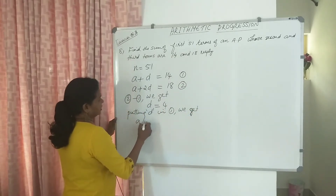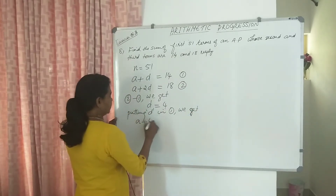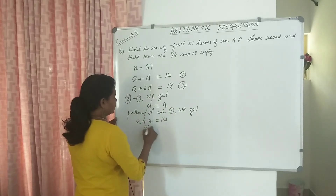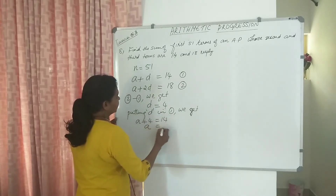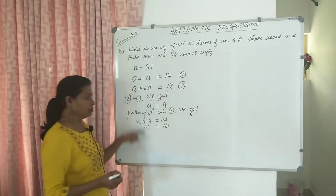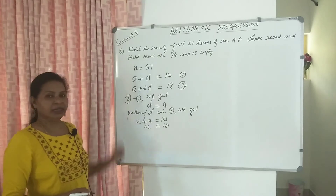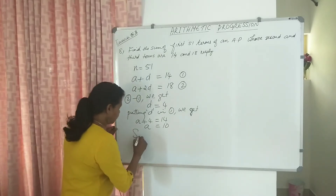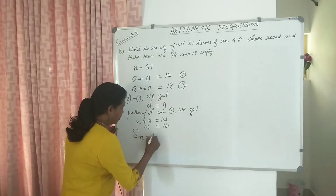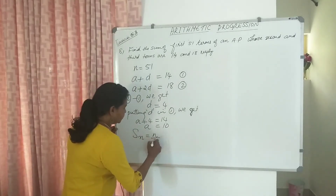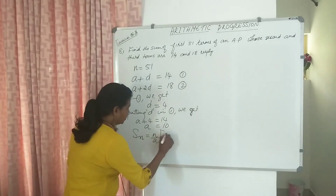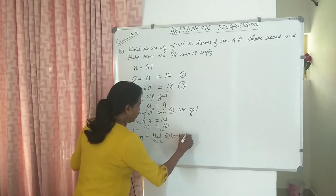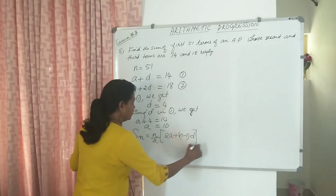Putting D in equation 1, we get A plus D and 4 is equal to 14. So A is equal to 14 minus 4, which is 10. Now write the formula of Sn equal to N by 2 into 2A plus N minus 1 into D.